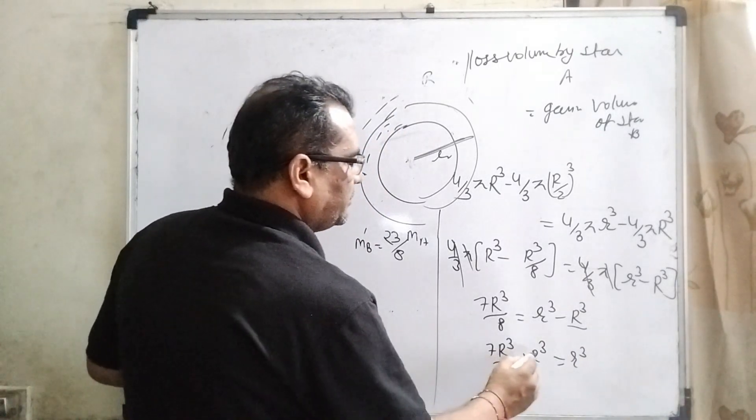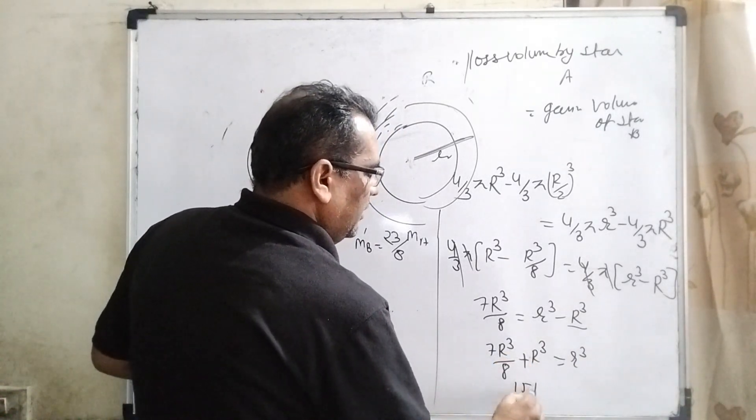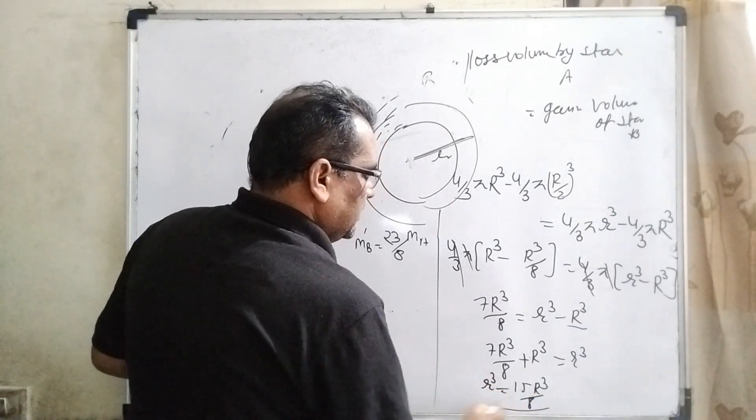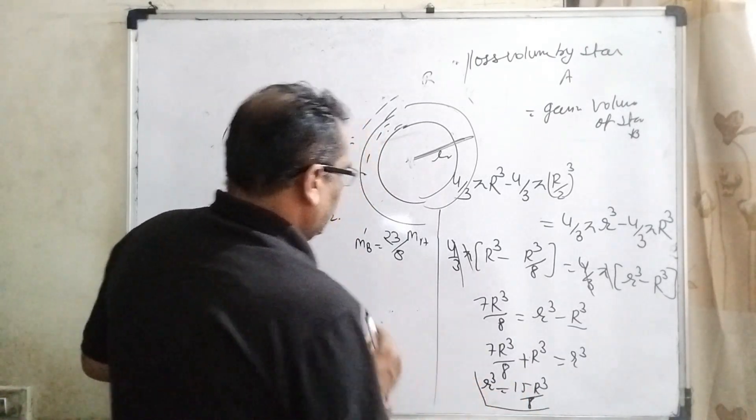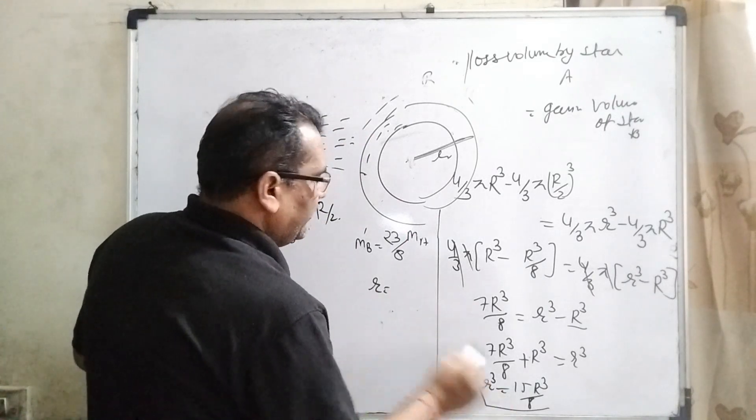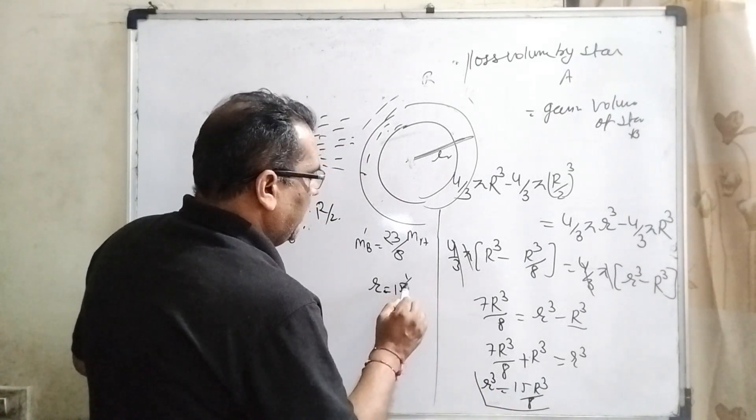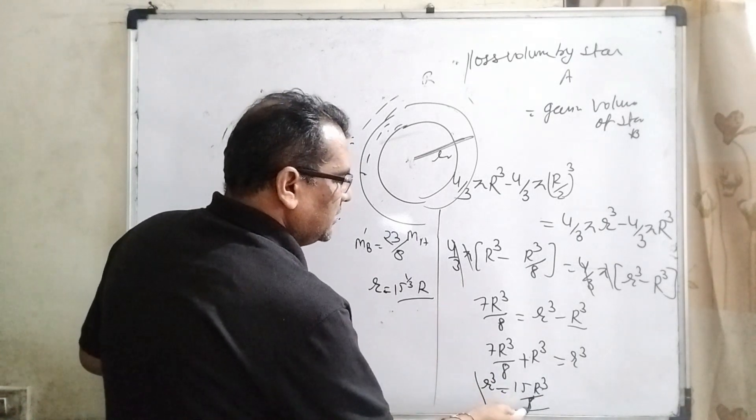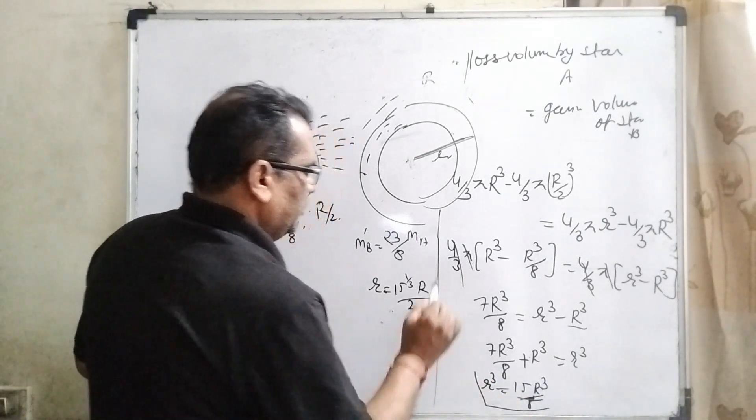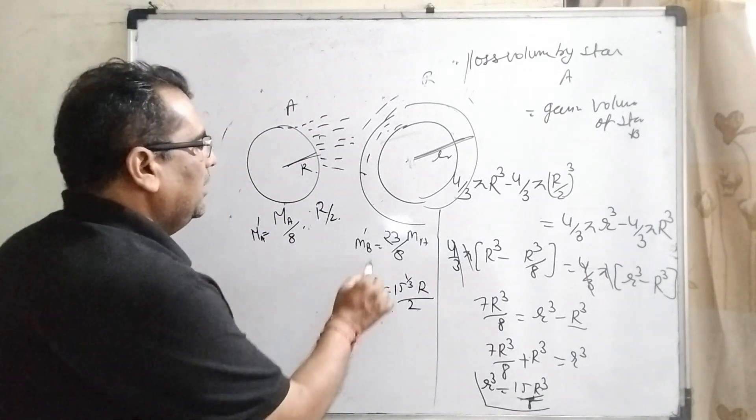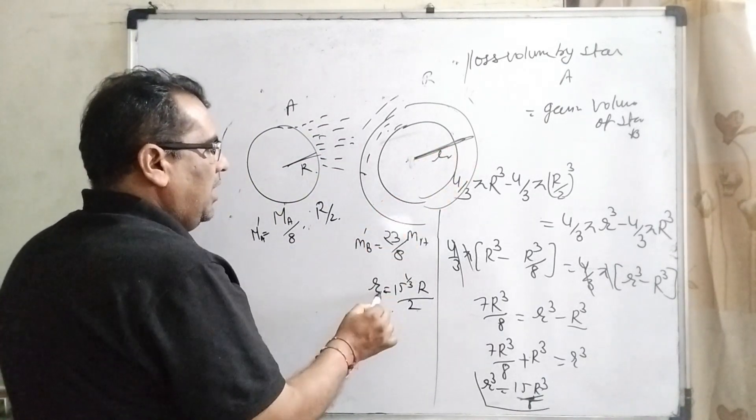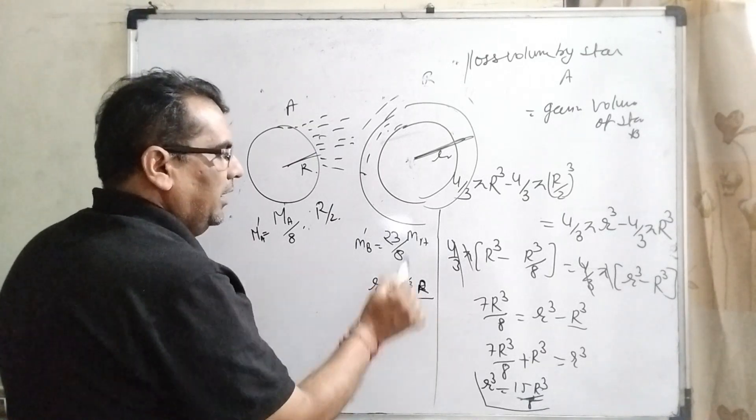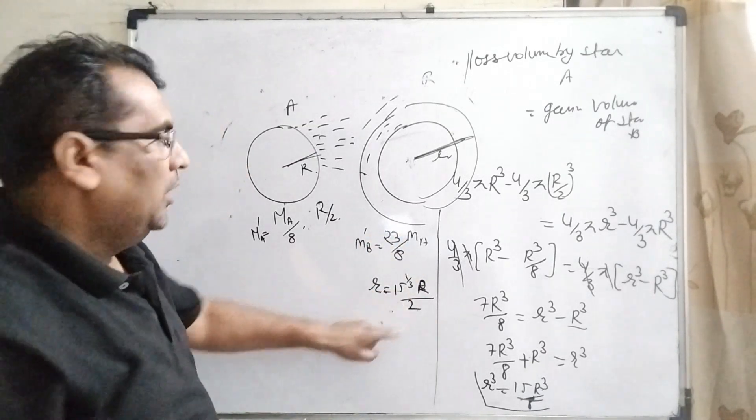4/3 π cancels out. Here you can see 7R³/8 equals RB³ minus R³. If you transpose R³ to the left side, it becomes positive. Then 15R³/8 equals RB³. Then RB can be written as (15)^(1/3) R/2.